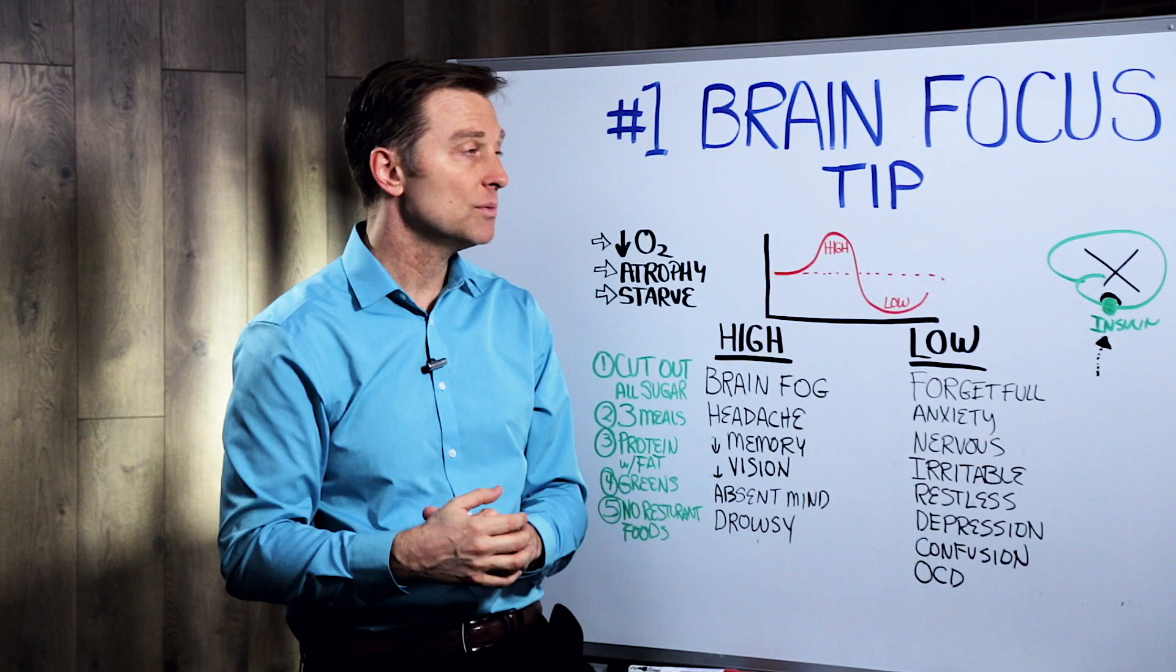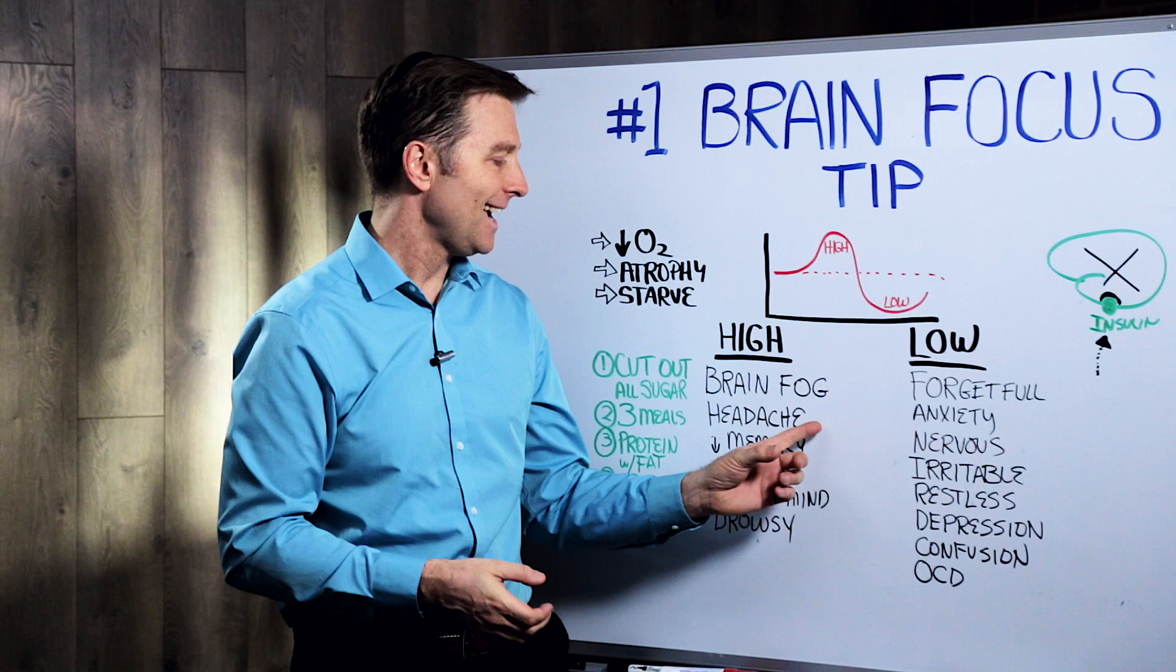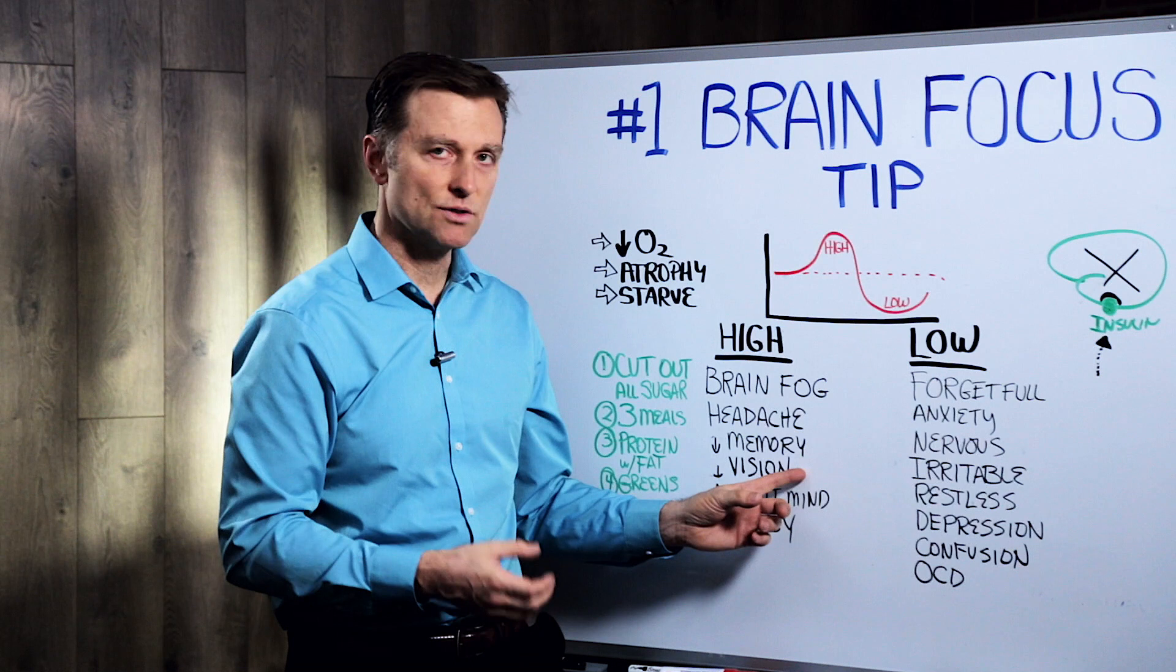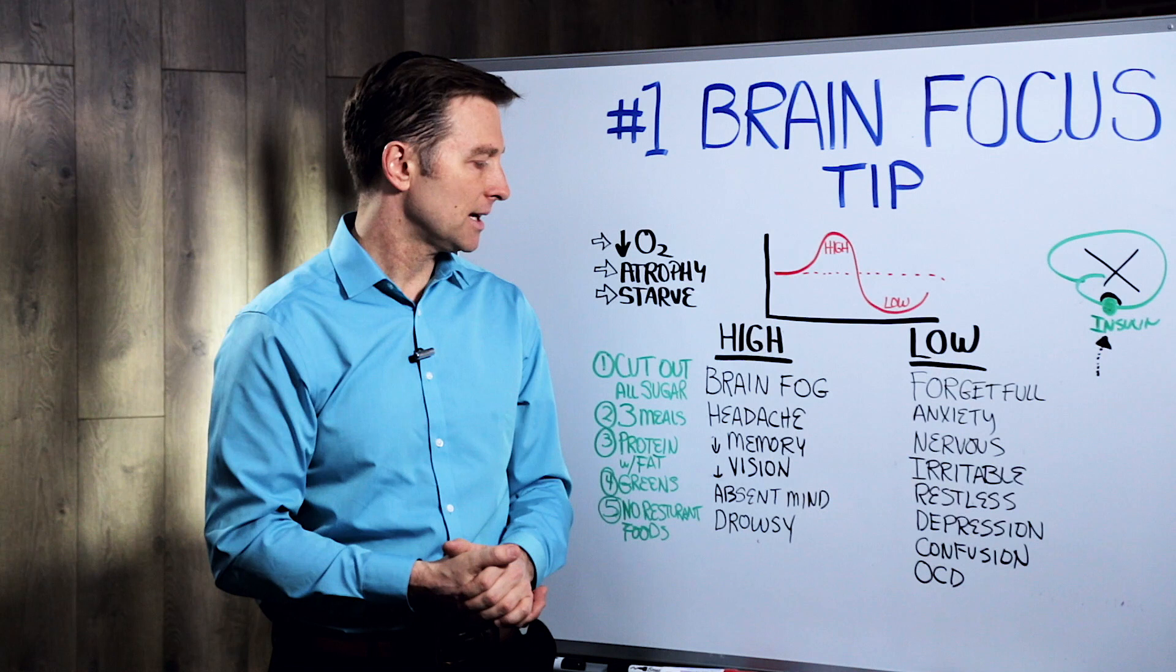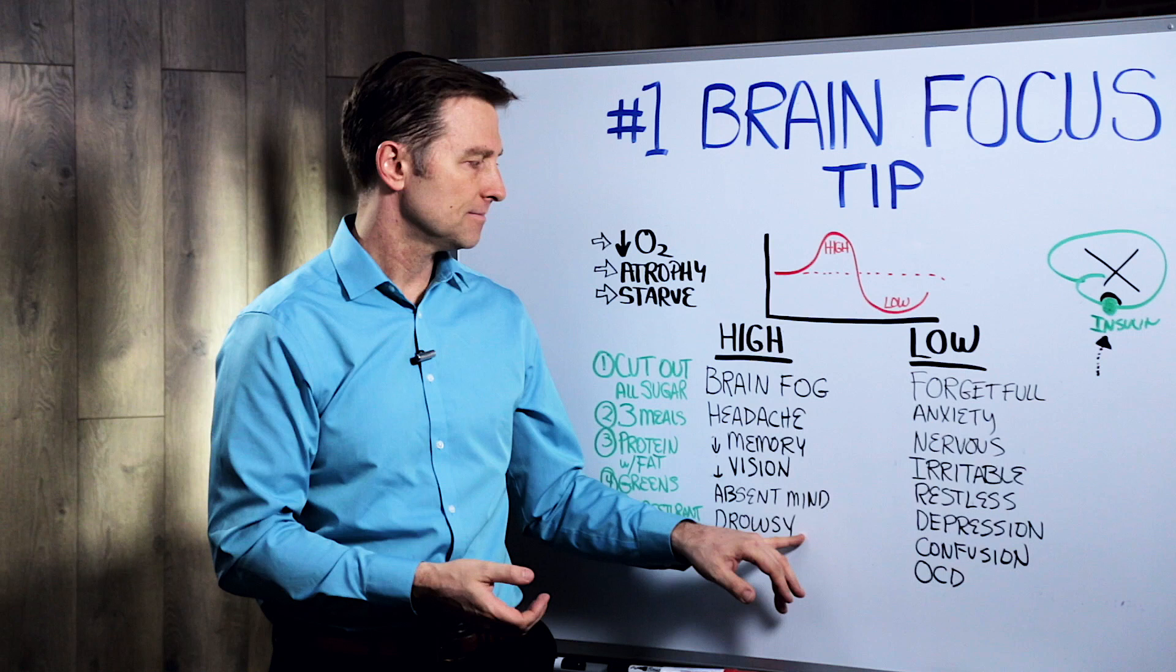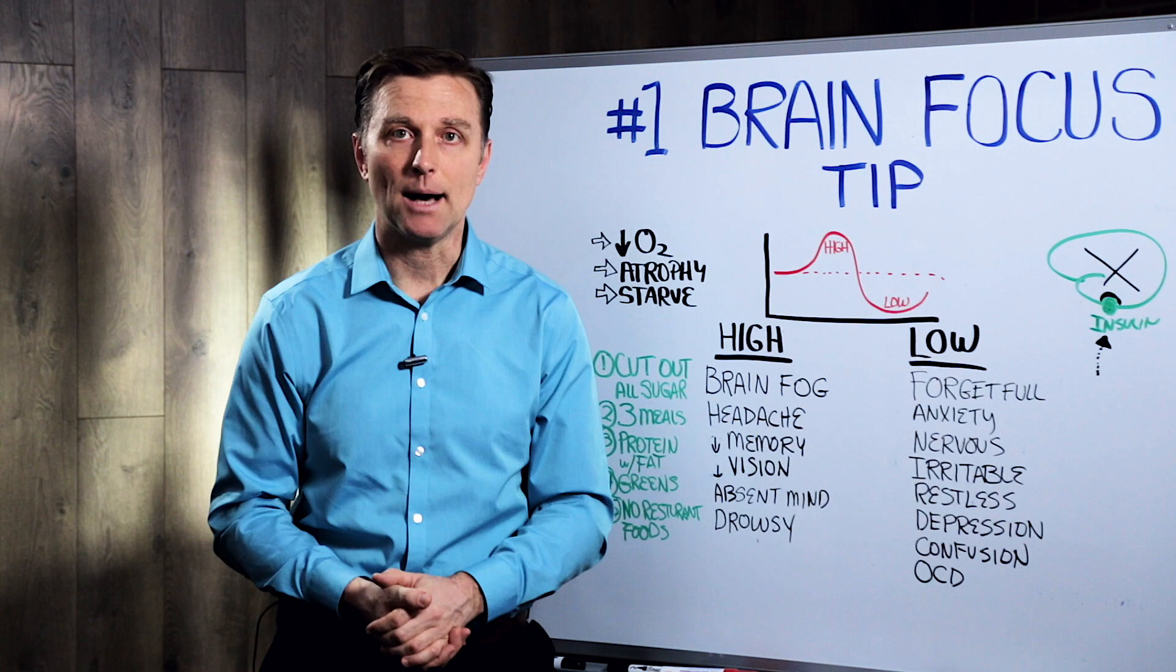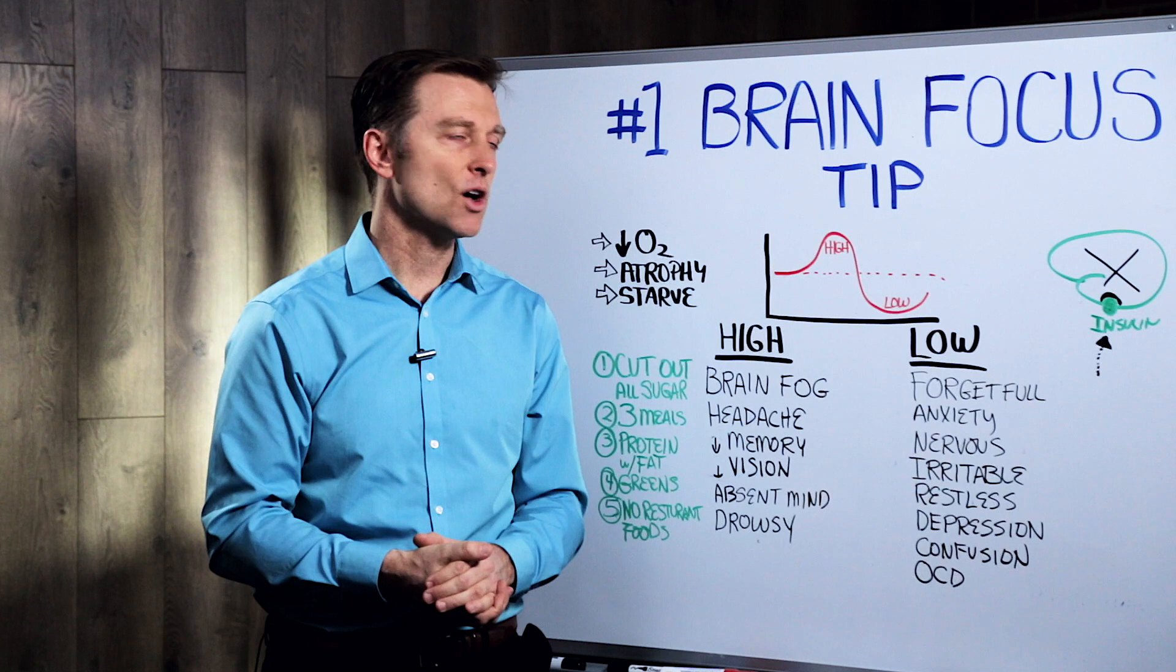So high blood sugar, and that would be mainly diabetics or pre-diabetics, brain fog, headaches, loss of memory and focus, vision issues, your vision starts going, absent-mindedness, things like you go in a room and you're like, okay, what did I go in here for? Drowsy. That's for high sugar. Mainly it's going to be sleepy though. You're going to want to take a nap and try to go to school. Try to study when your blood sugars are high. It's almost impossible.